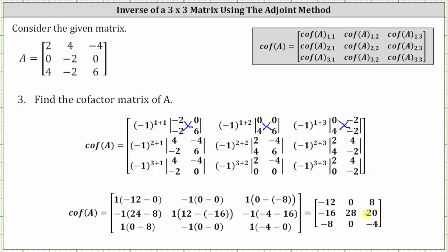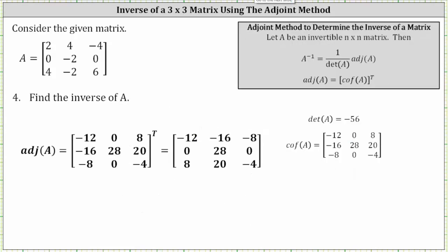You may want to pause the video and verify the remaining entries for the cofactor matrix. For number four, we're asked to find the inverse of matrix A using the adjoint method, where A inverse equals one divided by the determinant of A times the adjoint of A, and the adjoint of A is the transpose of the cofactor matrix. To find the adjoint, the first column of the cofactor matrix becomes the first row of the adjoint, the second column becomes the second row, and the third column becomes the third row.